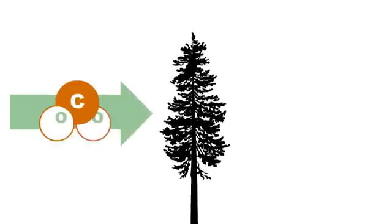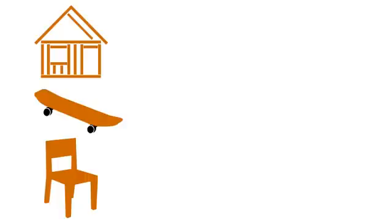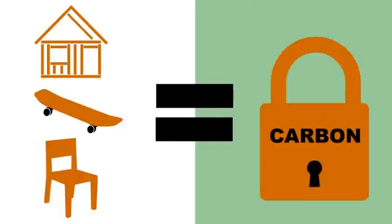The trees and plants use carbon to grow bigger and stronger, releasing oxygen in the process. Even after a tree is made into things like houses, furniture, or even skateboards, the wood holds onto that carbon as long as it's still wood.